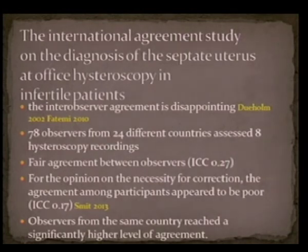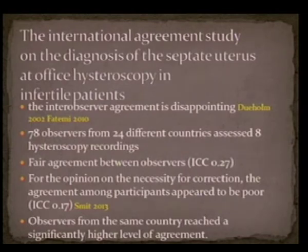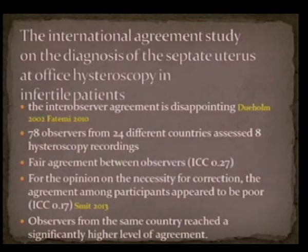Even though hysteroscopy plus laparoscopy is the gold standard, inter-observer agreement is quite poor even with this modality. An article published in 2013 by Cmit and co-workers included 78 endoscopic expert observers from 24 different countries who assessed eight hysteroscopy recordings. They found fair agreement between observers, but for the opinion on the necessity for correction of the abnormality, agreement appeared to be poor. Most interestingly, observers from the same country reached a significantly higher level of agreement.